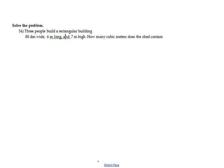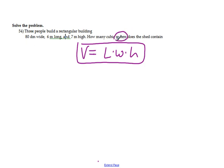Going to number 54, we're dealing with a rectangular building. We have 80 decimeters, 6 meters, and 7 meters high. So we are dealing with a volume of a rectangular solid, which is length times width times height. But this is where you have to be careful. Not all of the units are the same, and they want it in meters. Specifically meters cubed.